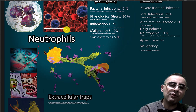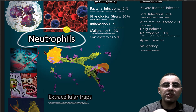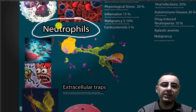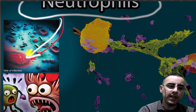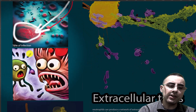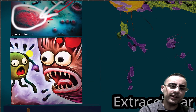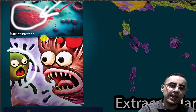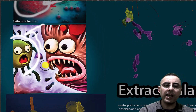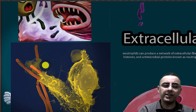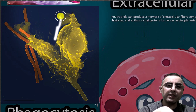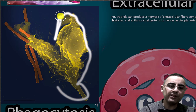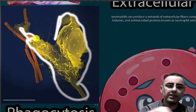Neutrophils are a central part of white blood cells. They are first responders when infection enters the body. They migrate to the infection area, attach to bacteria, engulf the bacteria, and digest them. In this image, you can see a neutrophil engulfing and eating bacteria.